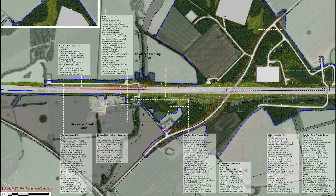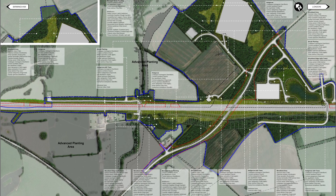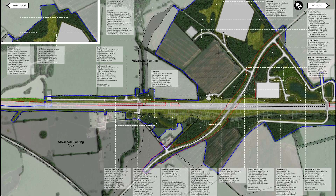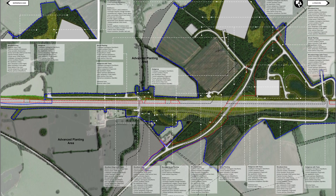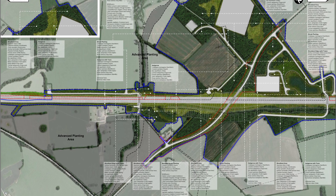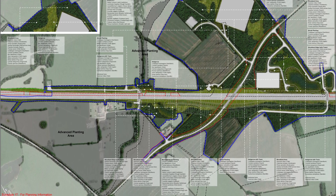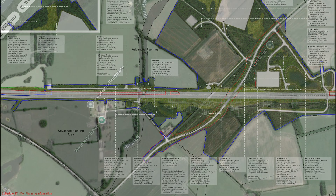We now reach the Edgecott Road area, where we can see the new alignment curving its way diagonally across the screen, with HS2 going across. There are a lot of new areas of woodland around this bit, and that is very evident when you look at how it was before.